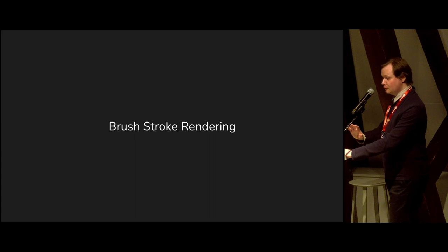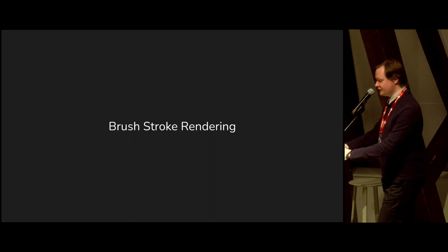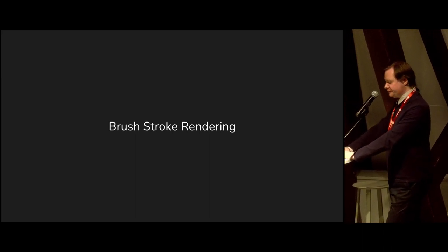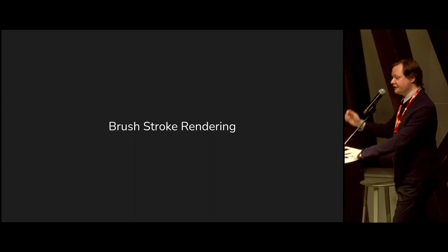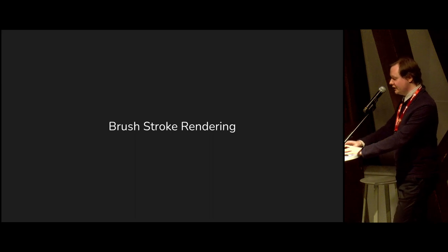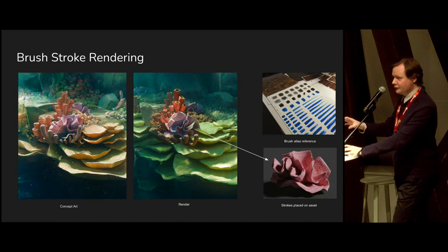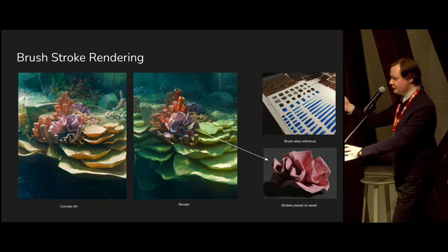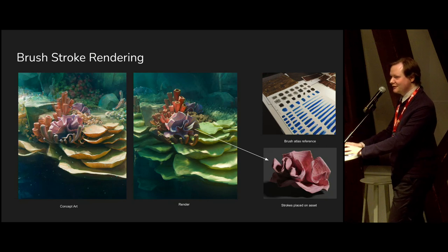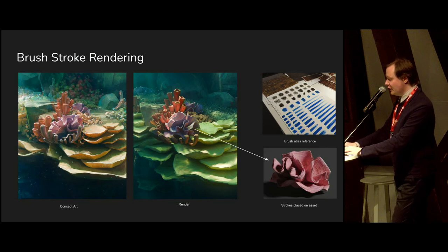Now we're going into even more fuzzy territory. The nature of the movie is that it should all consist of paint strokes — that's the look we're trying to achieve, so we need to render those strokes. Here's a comparison of the concept art and an early render based on it. You can see a zoomed-in version on the coral. The basic idea is that all surfaces get broken down into individual strokes, and the strokes come from an atlas created by making real brushes, scanning them, and putting them into Blender.